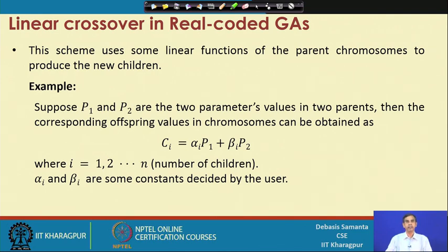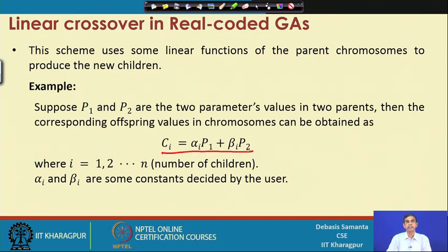We can discuss the technique better with an example. Suppose P1 and P2 are the two gene values belonging to two different parents. Then the corresponding offspring value Ci can be obtained using the formula: Ci = αi * P1 + βi * P2, where P1 and P2 are the gene values for the respective parents.